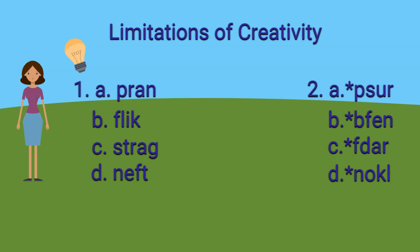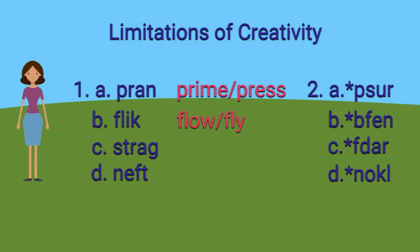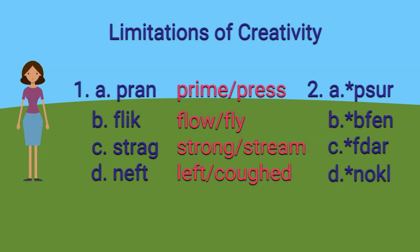Can you give me some words starting with PR? I have prime and press. For FL, I have flow and fly. For STR, I have stream. And for FT, I have left and cough. This is why the left-hand side feels easier — because those clusters all appear in the English language system, while PS, BF, FD, and KL are rarely found in English. So even with creativity, there are still limitations.